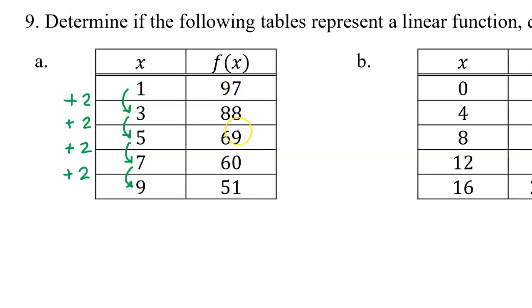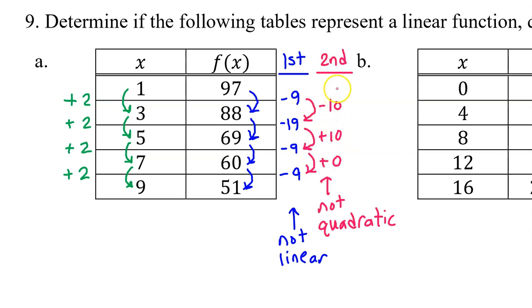If this is a linear function, the first differences will be constant. Since the first differences are not constant, f(x) is not linear. Now let's check the second differences. If the second differences are constant, f(x) is quadratic. The second differences are not equal, so f(x) is not quadratic either.